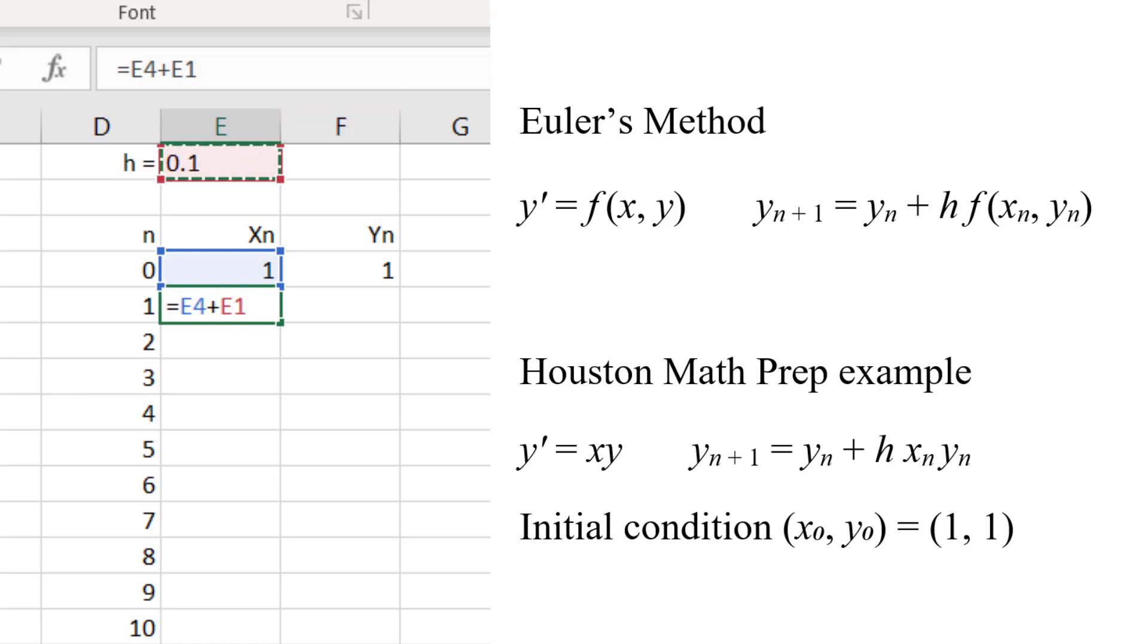If we fill down, we will get the same kind of thing we got last time, with the line numbers automatically incrementing as we go down. That is what we want to do for the value of x, but it is not what we want for the increment. We want to keep using that same value of h for every step. To keep that line number from incrementing, we type a dollar sign just to the left of the line number between the letter that identifies the column and the number that identifies the row. Then we select cells and fill down as before.